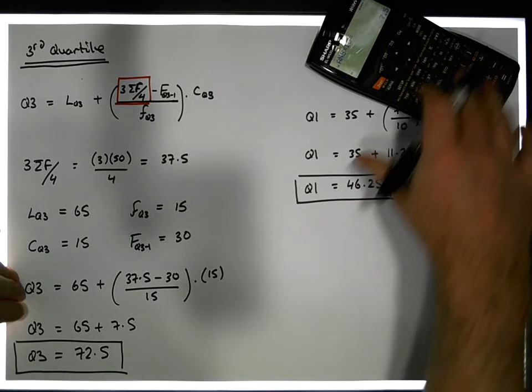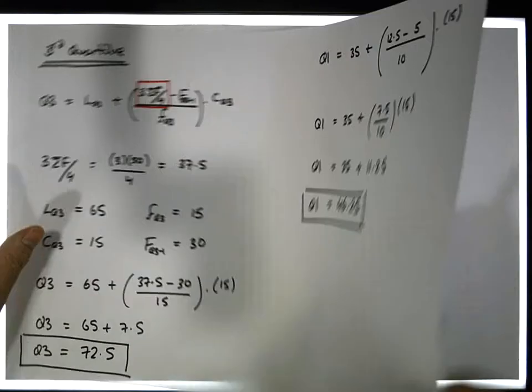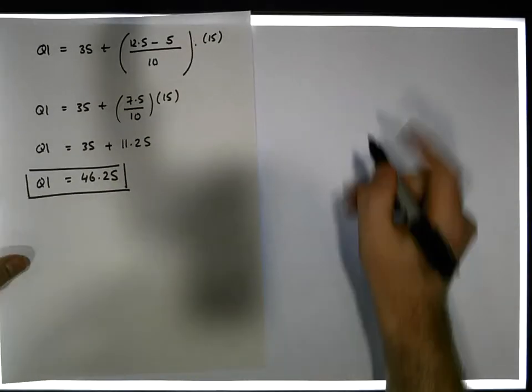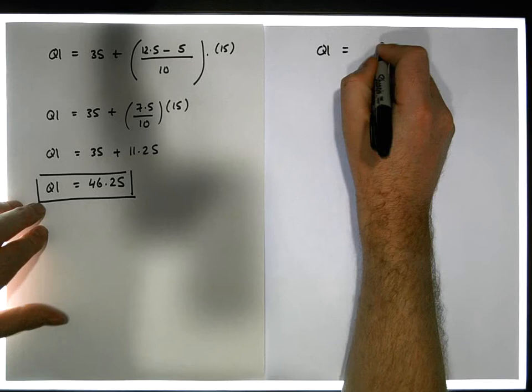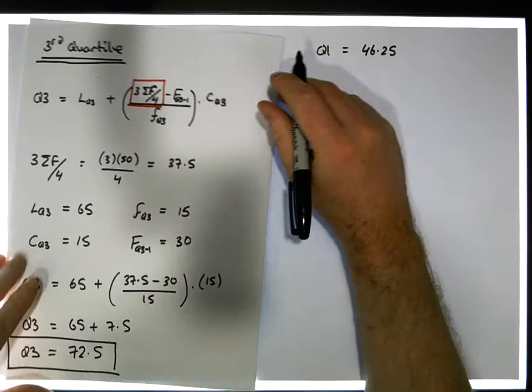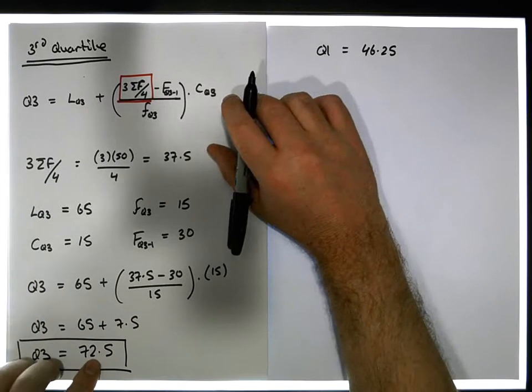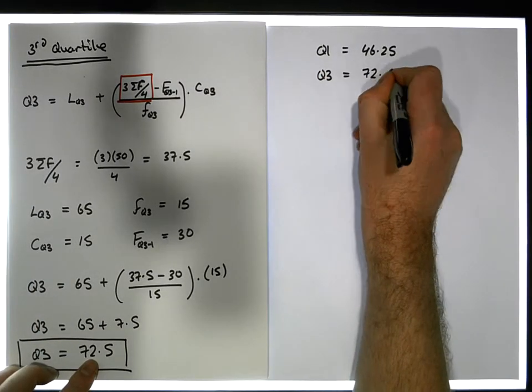So now we're ready to do our calculations. Let's actually just go to a new sheet here, and let me just write down all of our values that we have. So what we have is we know that Q1, the first quartile, Q1 is equal to 46.25, and we've also calculated that the third quartile is at Q3, is at 72.5. That's brilliant.